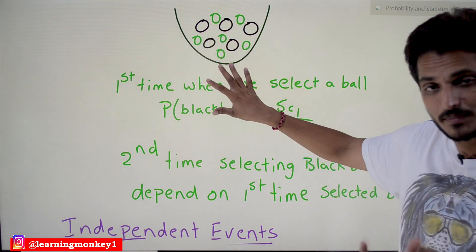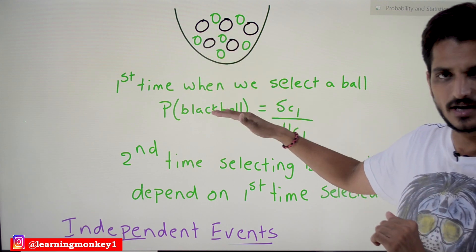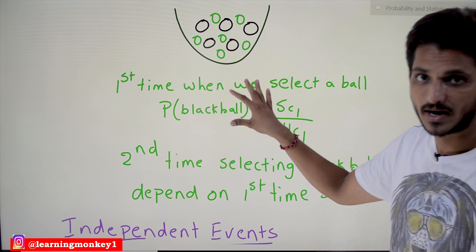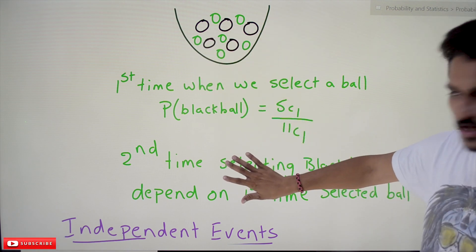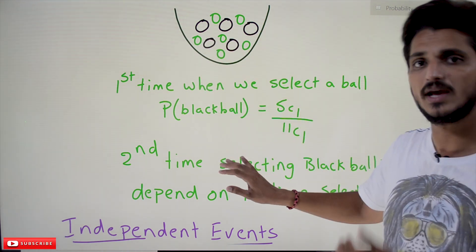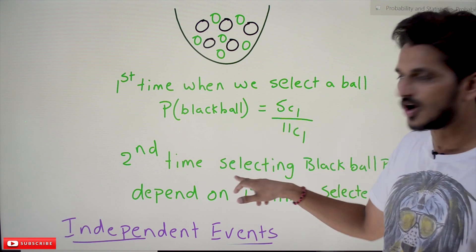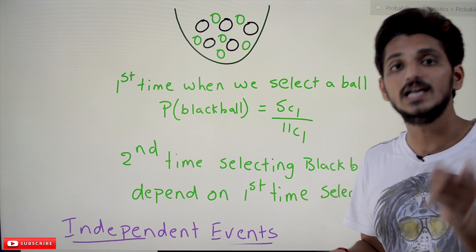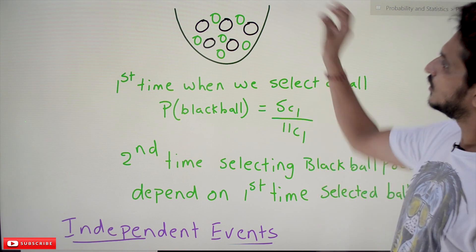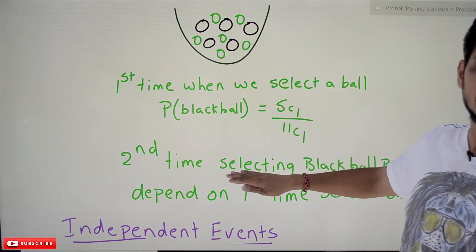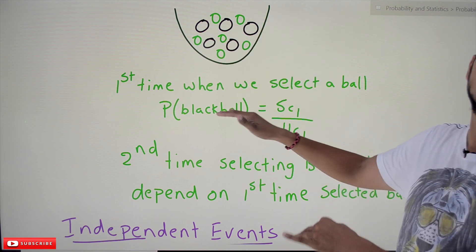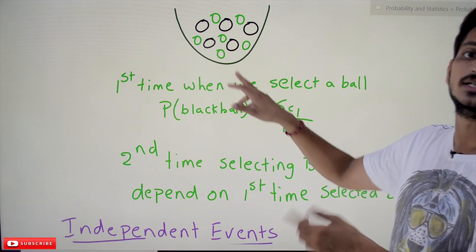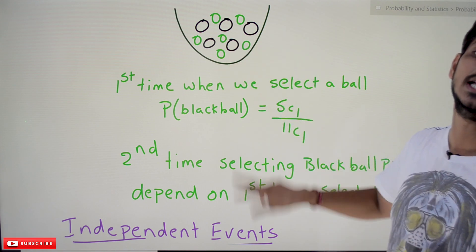Because whatever happened in the first pick, the probability of picking a black ball the second time is not changing. First time, probability of picking a black ball is 5C1 divided by 11C1. If you replace the ball, the second time probability is also 5C1 divided by 11C1. This event does not affect the second event's probability. So: if you don't replace the ball, it is dependent events; if you replace the ball, it is independent events.